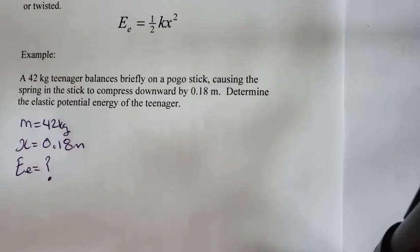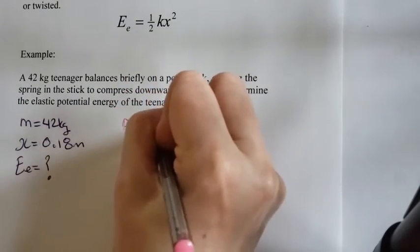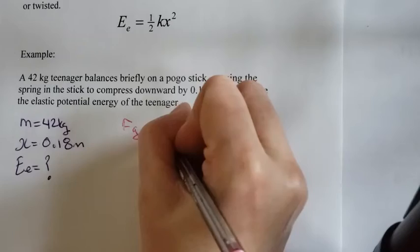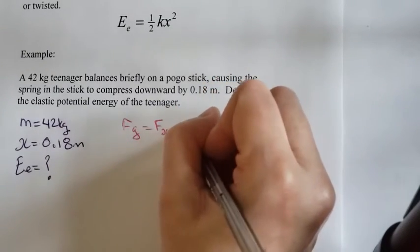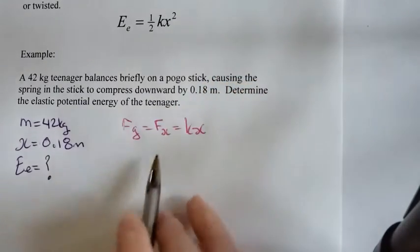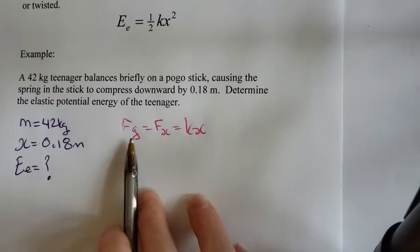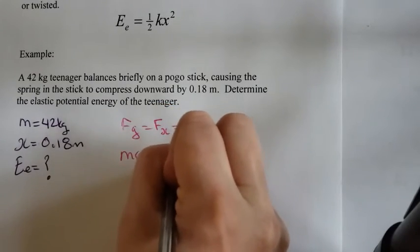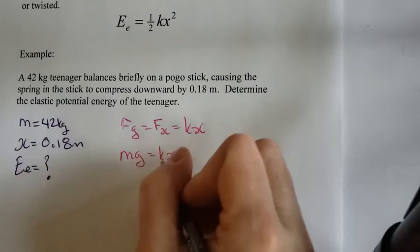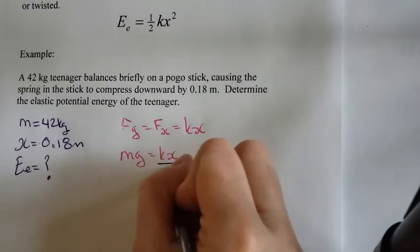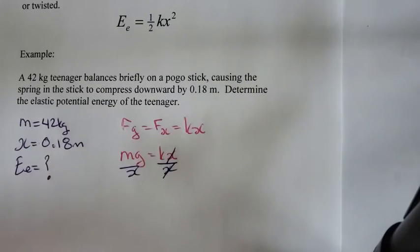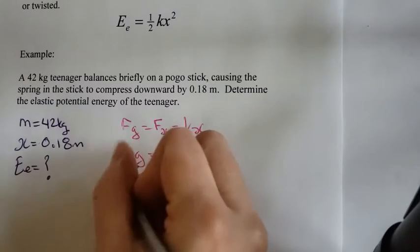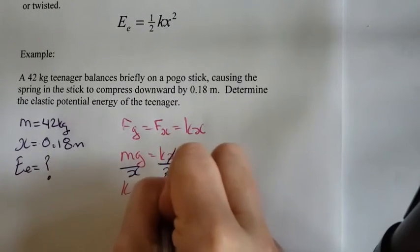So what's causing the spring or the pogo stick to compress is actually the teenager's weight. So it's the force of gravity is equal to that elastic force. And we know the elastic force is just KX. So the force of gravity is what's causing the compression. So they're the same. So we know that Mg is equal to KX. Trying to get K all by itself. So I'm going to divide both sides by X. X cancels out. So K is equal to Mg divided by X.